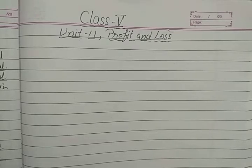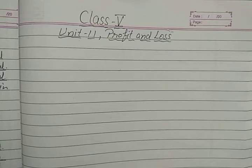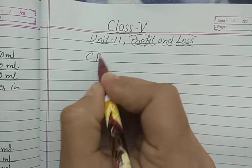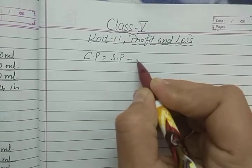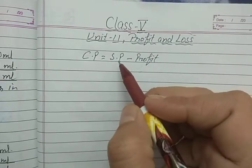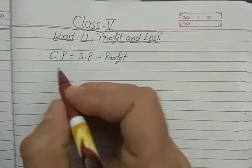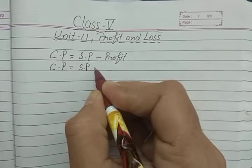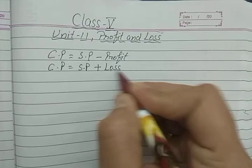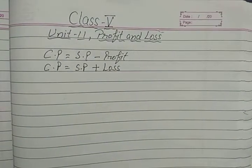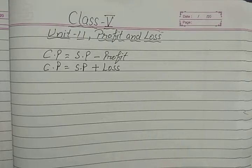Hello students. In the previous video we did word problems based on determining the selling price, and we also learned the formulas for determining the cost price when the selling price and profit or loss is given. We learned two formulas: cost price equals selling price minus profit when profit is given, and cost price equals selling price plus loss when loss is given. Today we will start Worksheet Number 4 based on these formulas.